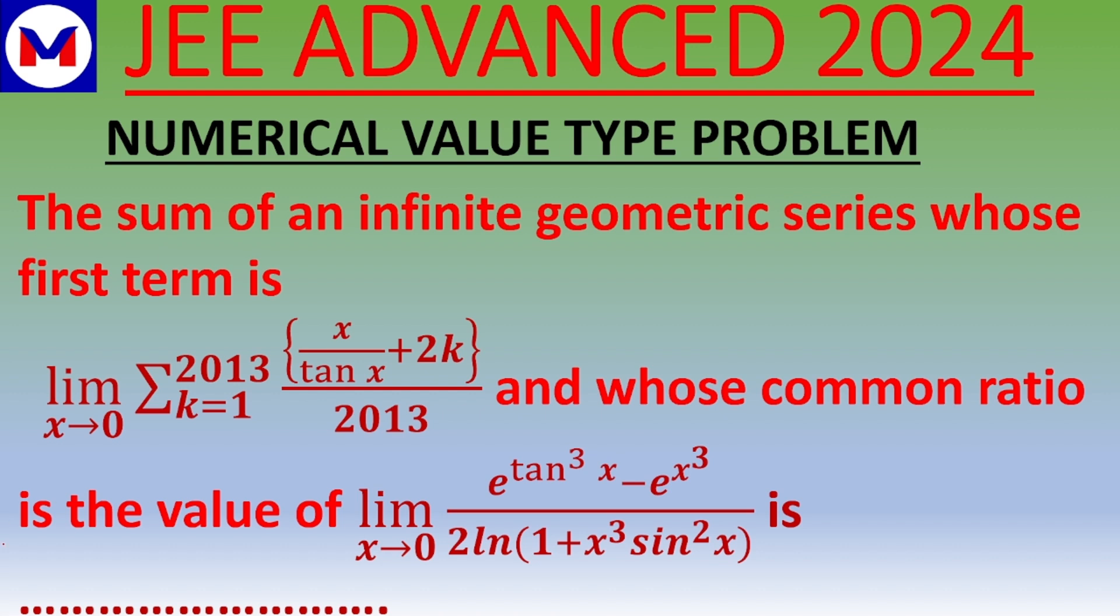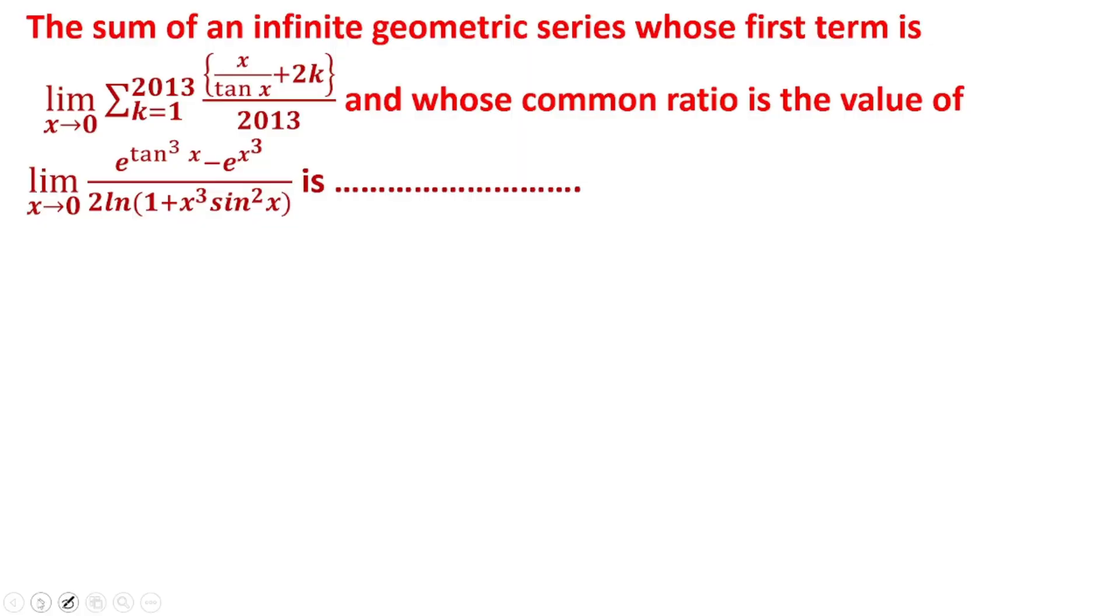Let's look at the solution. First, the first term is given, which we denote as 'a'. The first term of the GP is given as limit x tends to 0, sigma k equals 1 to 2013,